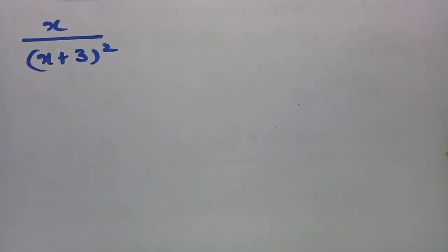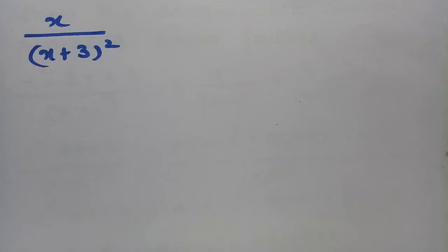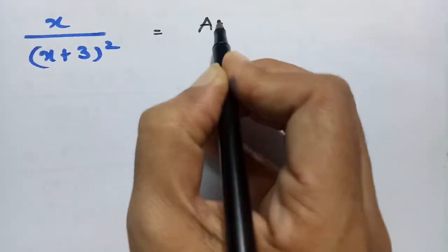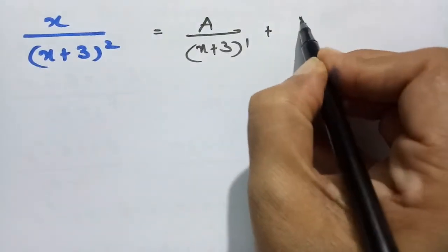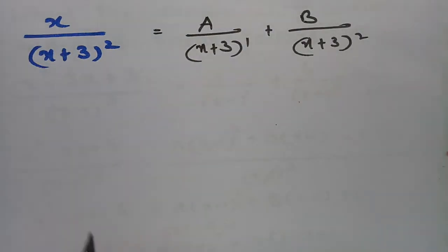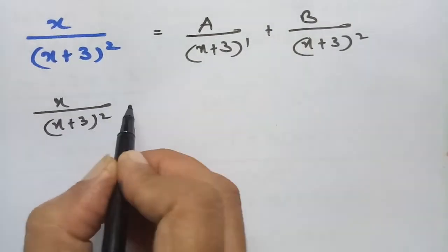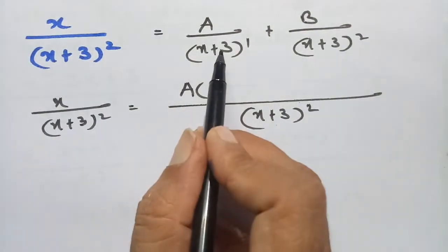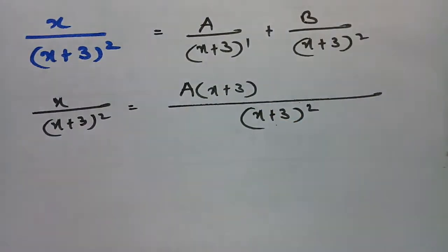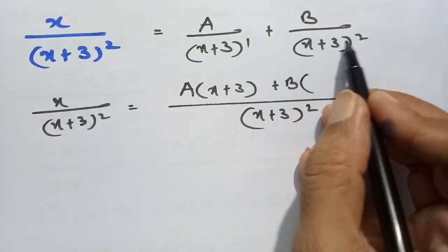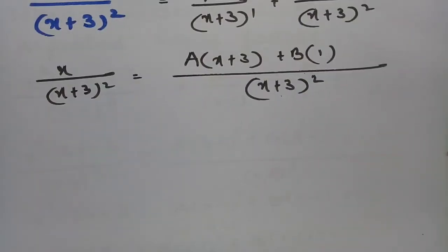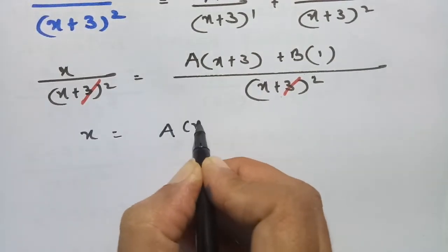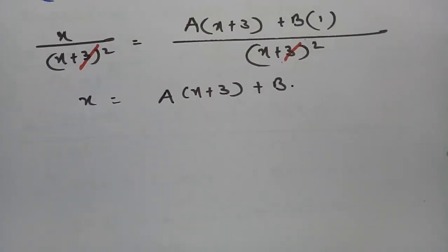The next equation is x/(x+3)². Since (x+3) is repeated twice, we need two constants: A/(x+3)¹ + B/(x+3)². Taking (x+3)² as LCM: the numerator becomes A(x+3) + B. Cancelling (x+3)² on both sides leaves x = A(x+3) + B.